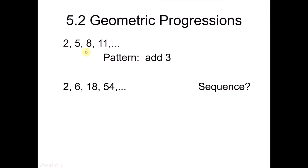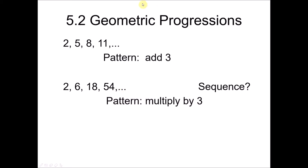This type of progression we already learned in the previous video is called arithmetic progression. And how about the second sequence? Is this a sequence? The answer is yes, because for the following term you multiply 3 to the previous number. So 2 multiplied by 3 gives 6, 6 multiplied by 3 gives 18, multiplied by 3 gives 54, and so on.